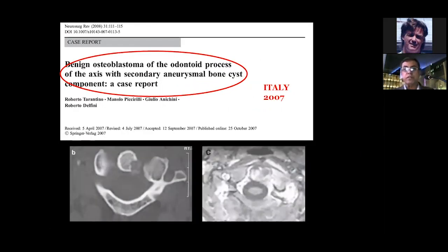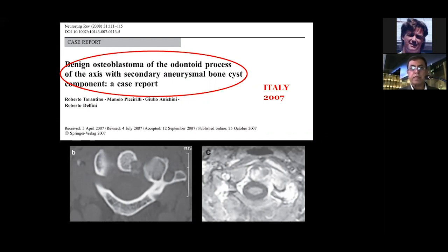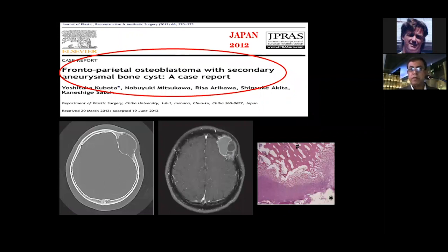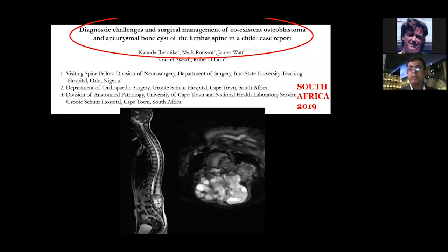Another common tumor to have aneurysmal bone cysts inside is osteoblastoma. Osteoblastoma is a benign tumor, but then you can develop aneurysmal bone cysts inside it. Papers from Italy (Roberto Delfini), China, and South Africa (2019) describe huge occipital osteoblastomas with aneurysmal bone cysts inside, and from India — osteoblastoma with secondary aneurysmal bone cysts. The diagnostic challenge when you have both is a problematic phase.